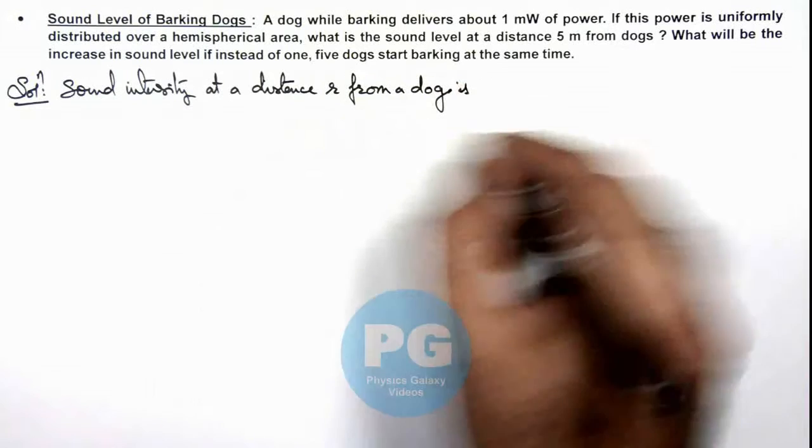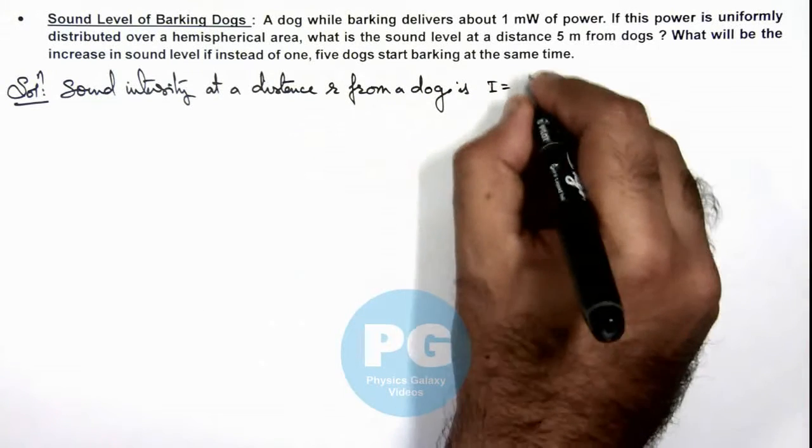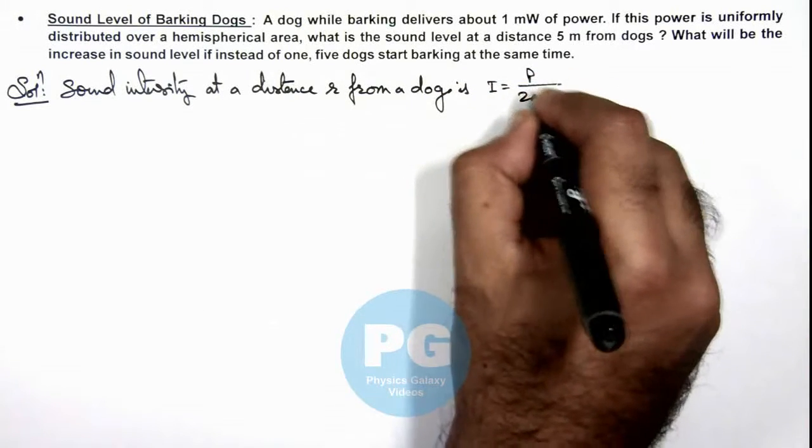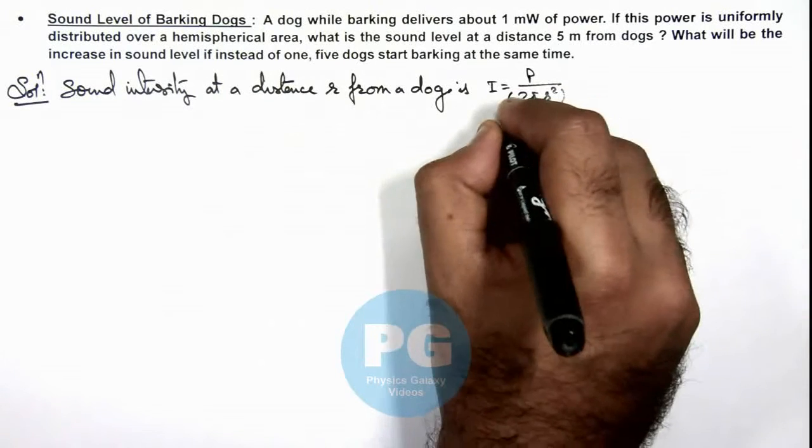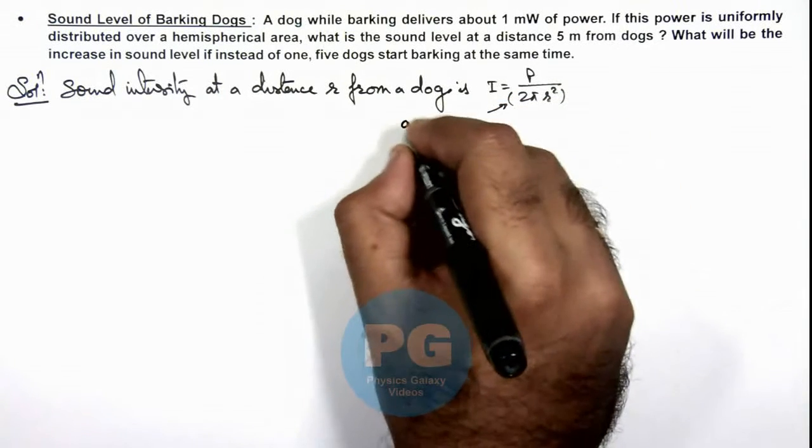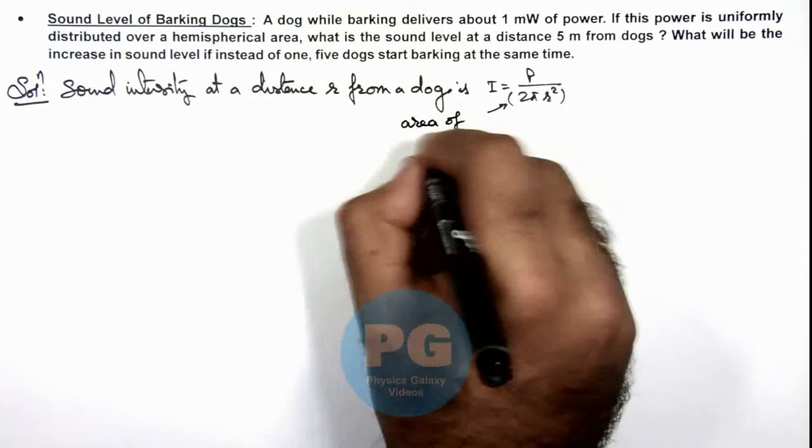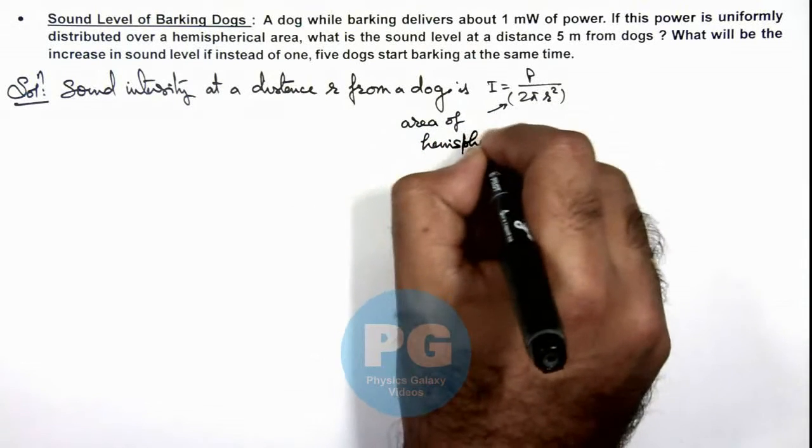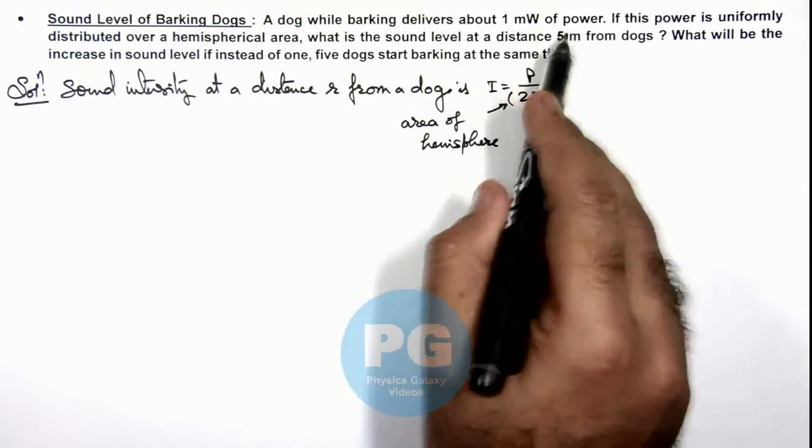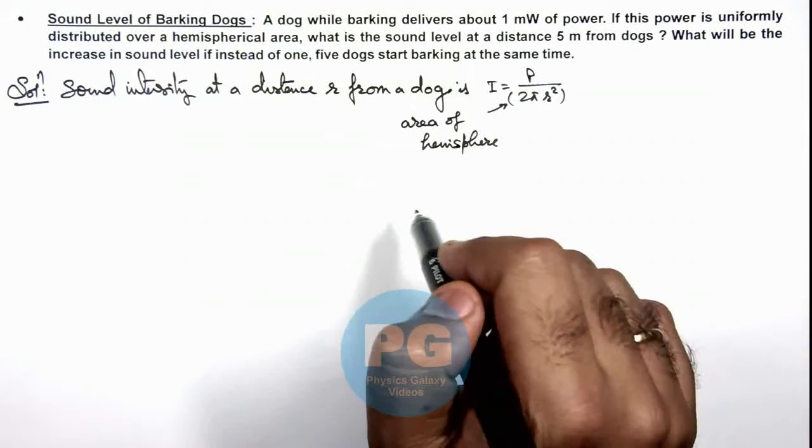This we can write sound intensity is P upon 2πr², where this we are taking as area of hemisphere because we are given that the power is distributed over a hemispherical area.